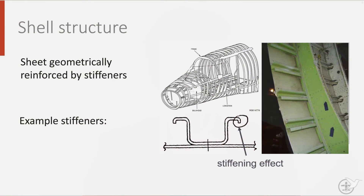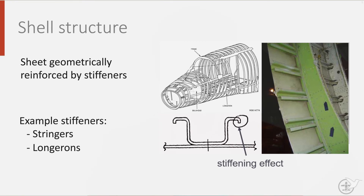Now let us take a look at the fuselage. A fuselage has three types of stiffeners to keep its shape and carry the load: stringers, such as the ones in wings; longerons, which are heavy longitudinal stiffeners effectively combining several stringers; and frames to maintain the circumferential shape. In the photo here, you can see inverted hat stringers. Using them this way, they are more inspectable. The curve at the rim of the hat is added to give more stiffness.